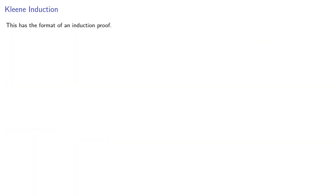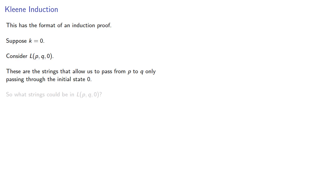This has the format of an induction proof. So we'll prove our base step. Suppose k equals zero. Consider L(p,q,0). Remember, these are the strings that allow us to pass from p to q, only passing through the initial state zero at most. So what strings could be in L(p,q,0)?